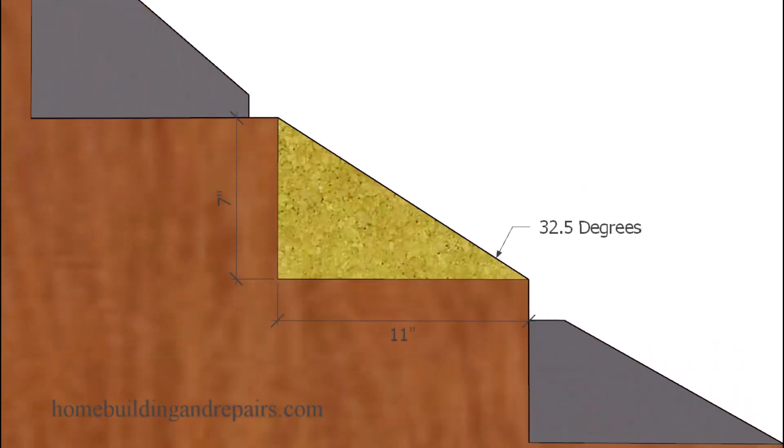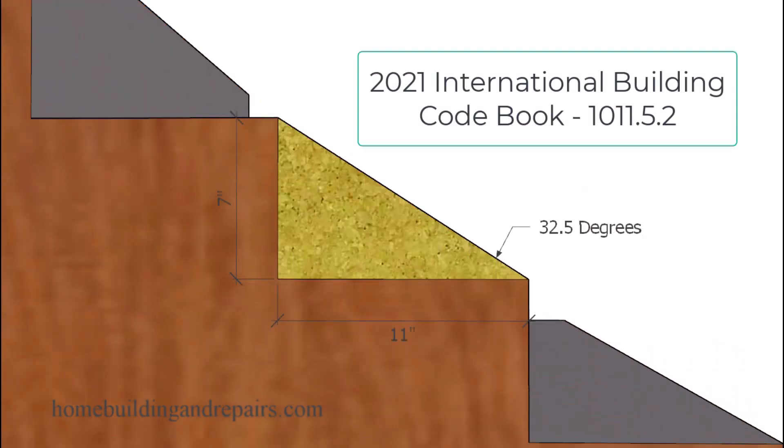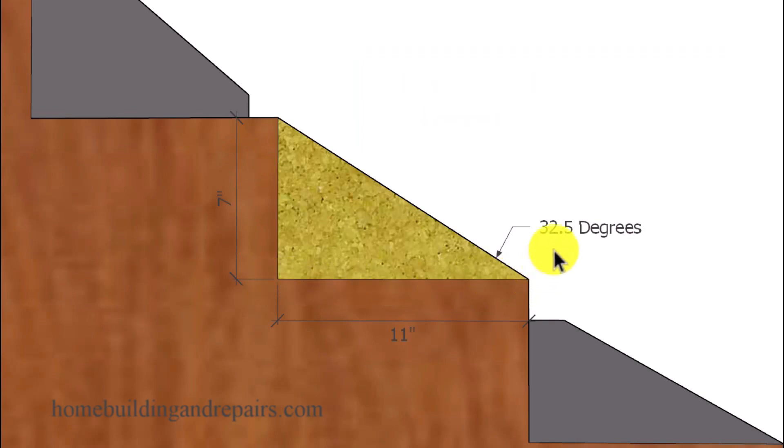This building code here is from the International Building Codebook, not the Residential Building Codebook, and has a seven inch maximum riser, four inch minimum riser height, along with an 11 inch minimum stair tread depth measurement, bringing us to a 32.5 degree angle. This stairway is probably going to be used for public, commercial, industrial, large apartment buildings, or buildings with more than 50 occupants.